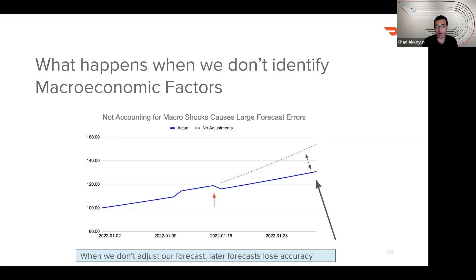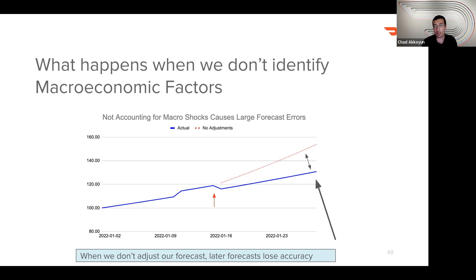Let's say this graph shows the number of orders in a sub-market we recently launched. Since it's a new sub-market, order volume grows over time. But during the middle period, we receive a macro shock which pushes orders up. If we want to generate a forecast on the day the macro shock ends, and we train our model on historical data up to that point, we'll get a super high forecast for the future — because the model will think there's a growth in trend and bake it in. When actuals go back to normal, this creates a huge forecast inaccuracy.